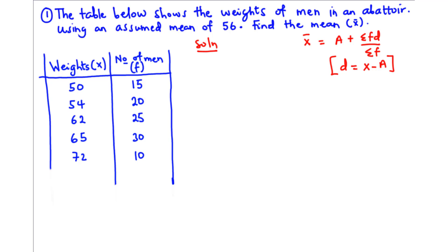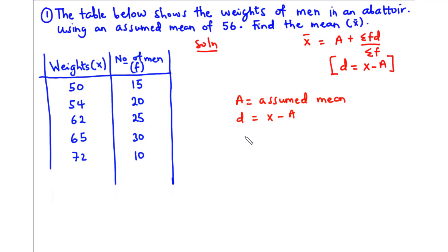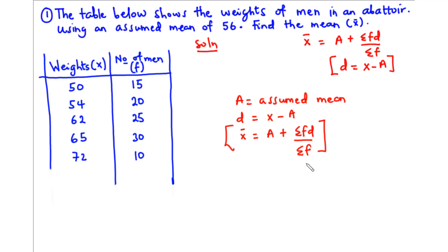Let's talk about the assumed mean. Given that the mean for a distribution is assumed to be A, we say that A is the assumed mean. The difference between the class midpoints for each class interval and the assumed mean is called the deviation, so d equals x (the class midpoint) minus the assumed mean. The actual mean for the distribution is given by: x̄ = A + Σfd / Σf. This is the formula for finding the mean using the assumed mean method.